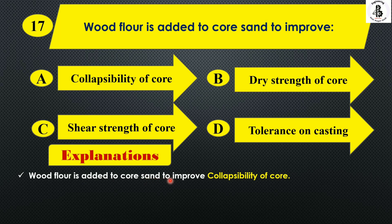Wood flour increases the collapsibility of the core so that the core can be easily broken, making it easy to remove the core when producing a hollow casting. So Option A.